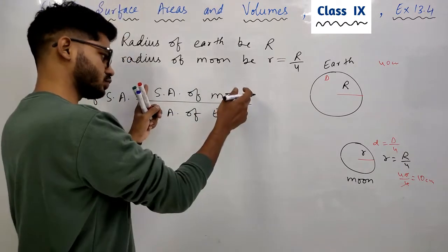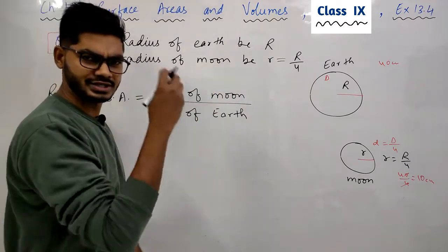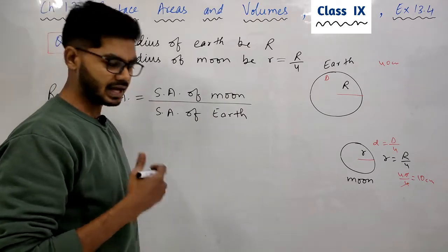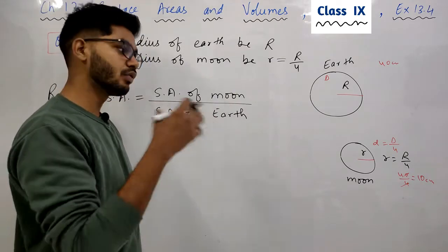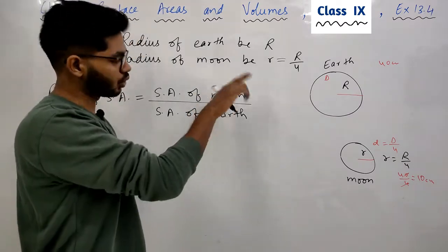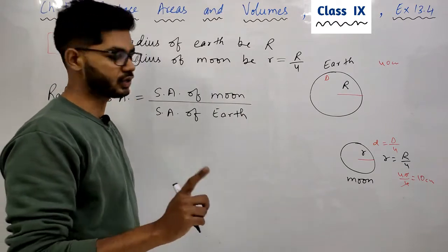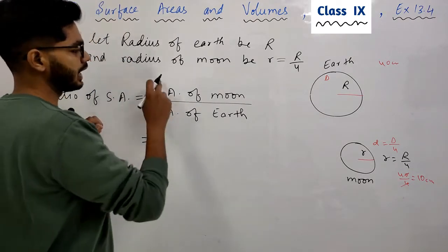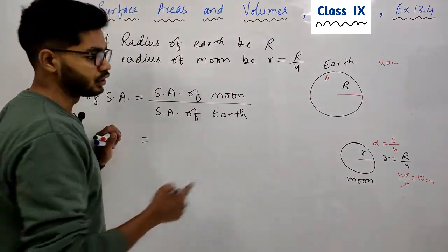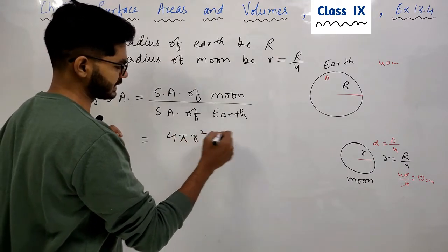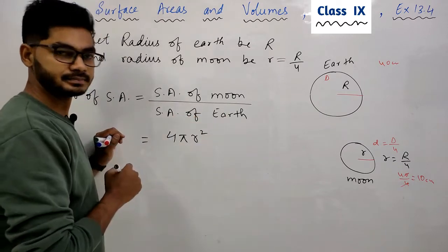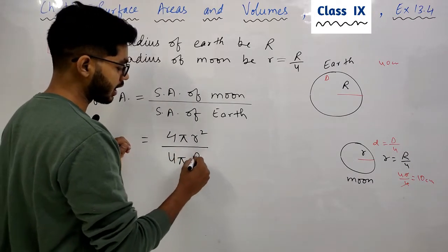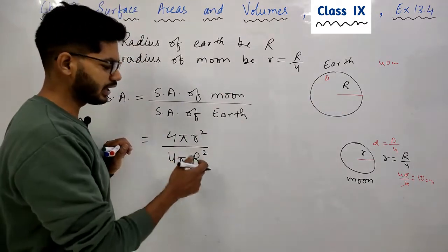कभी भी ratio निकालते हो, तो जो छोटी चीज होगी — चाहे surface area हो, चाहे volume — उसको numerator में लिखना, ताकि fraction proper fraction हो। दोनों answers बिल्कुल ठीक होंगे, लेकिन standard form यही है। Moon किस shape का है? Moon spherical shape का है, तो इसका surface area = 4πr²। और earth भी spherical shape का है, तो इसका surface area = 4πR²। तो ratio बना: 4πr² over 4πR²।